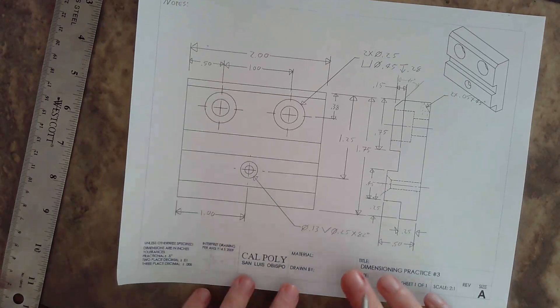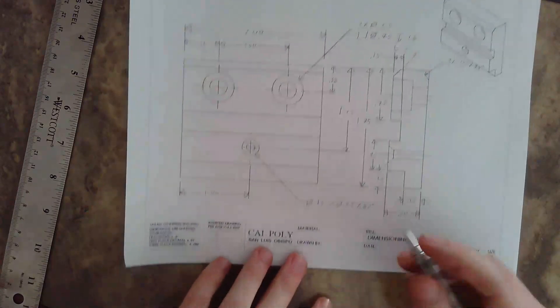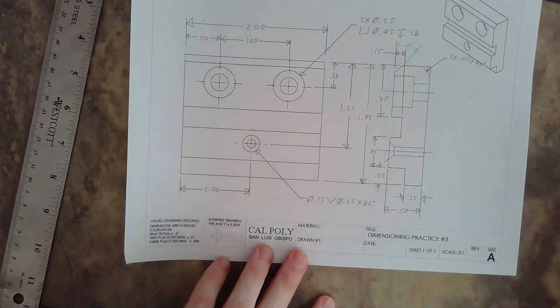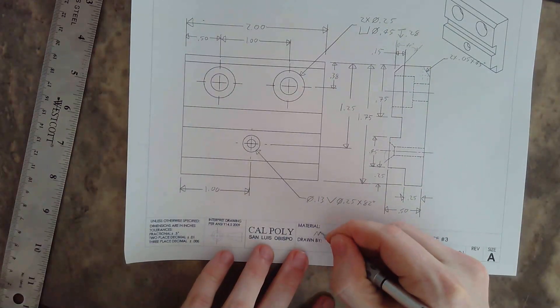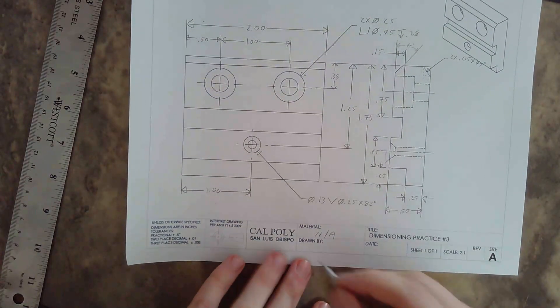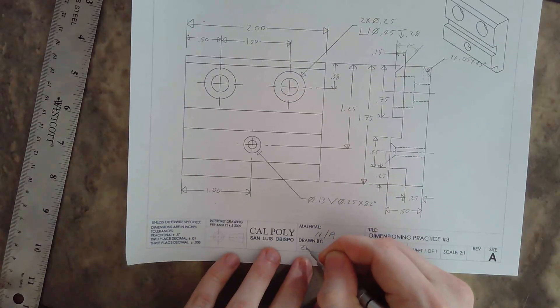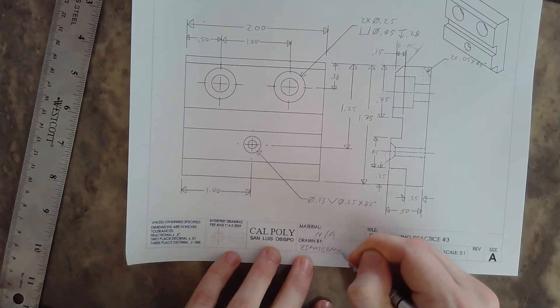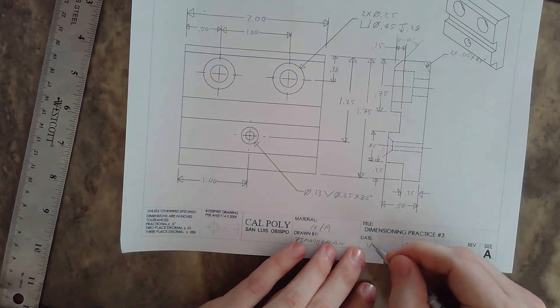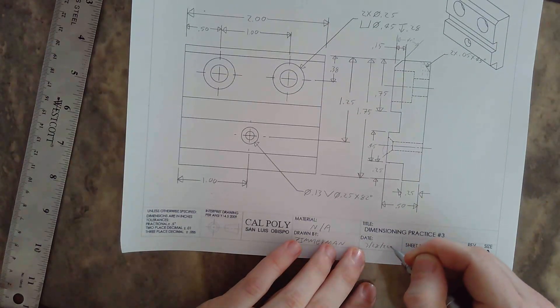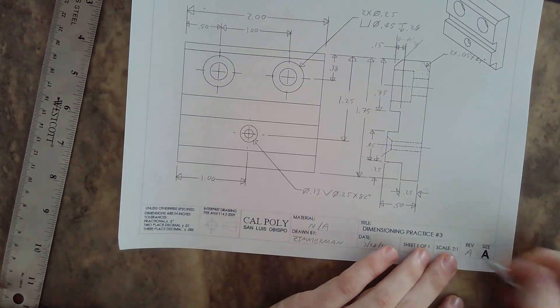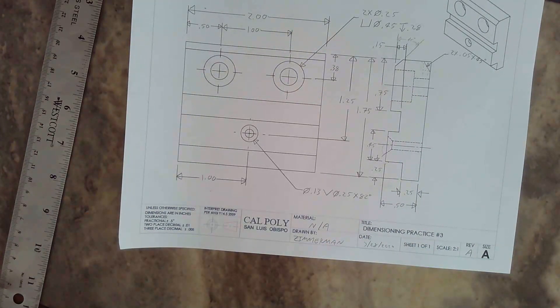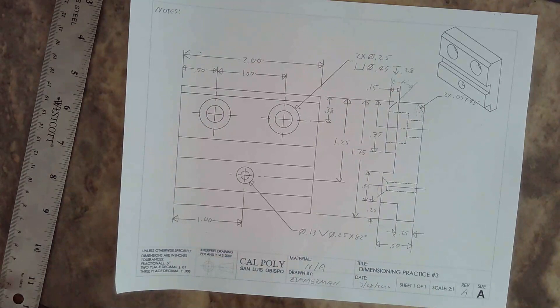All that's left for this is to fill out my title block. Material—I have no idea, this is just a drafting practice, so I'm going to write N/A. Drawn by—write my name, all capital letters. Put the date. Version A. And that is a completed drawing.